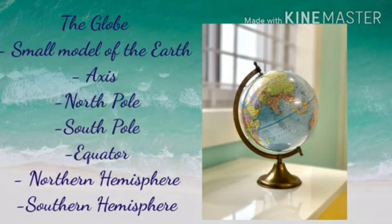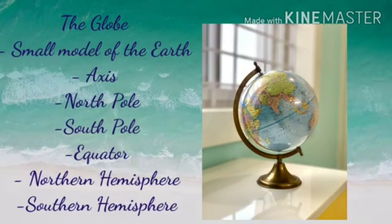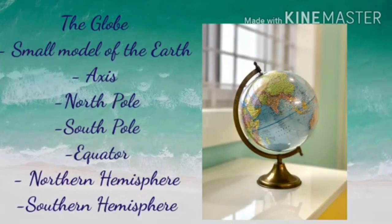Do you know children, what is an axis on the globe? The globe rotates on its axis, which is a line that runs through top to bottom. The earth is so big that we cannot properly scale it. So we take the help of a globe. A globe is a small model of the earth.